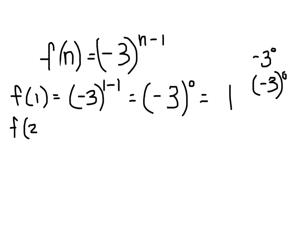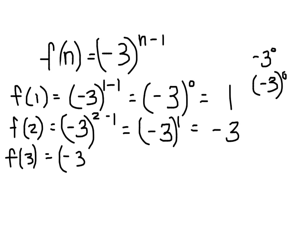Then, f of 2. What's 2 minus 1? 1. What's negative 3 to the first power? Negative 3. And done. f of 3. Negative 3 to the 3 minus 1. What's 3 minus 1? 2. What's negative 3 squared? 9. Now, again, here's where you've got to be careful. Is it in parentheses? Yes. So, it's saying negative 3 times negative 3, which is positive 9.